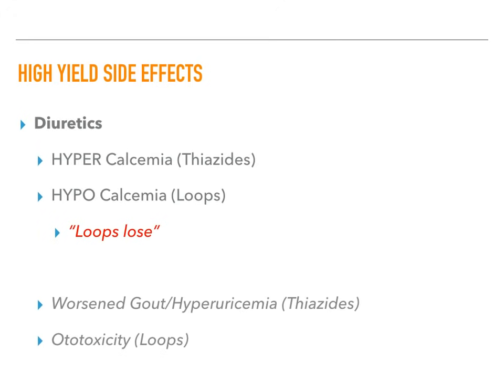Diuretics are probably the highest-yield drug class on Step 1 or Level 1. Hypercalcemia is caused by thiazides, while hypocalcemia is caused by loop diuretics — remember 'loops lose calcium.' Thiazides also cause hyperuricemia and can worsen gout. Loop diuretics like furosemide cause ototoxicity. These four facts are the highest-yield side effects of the diuretics.